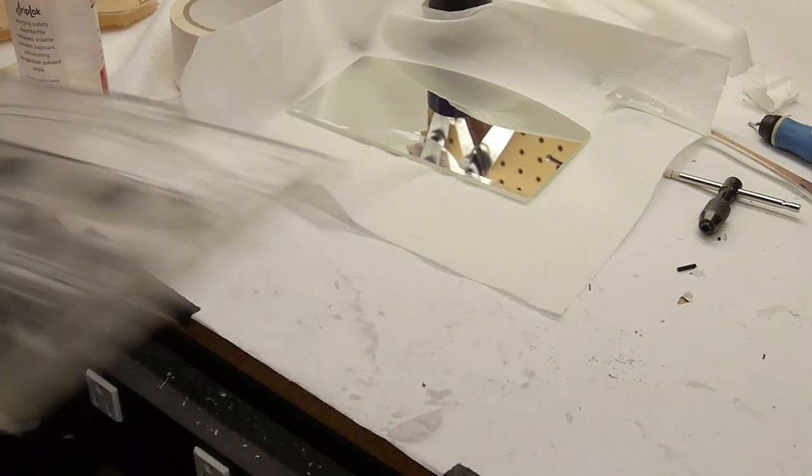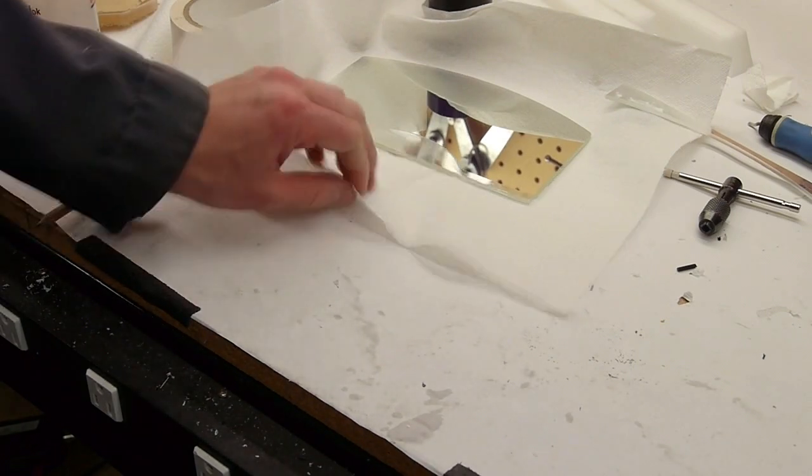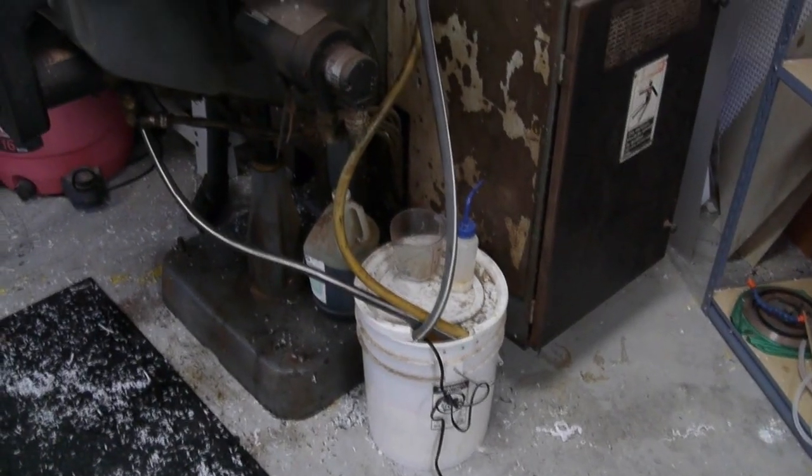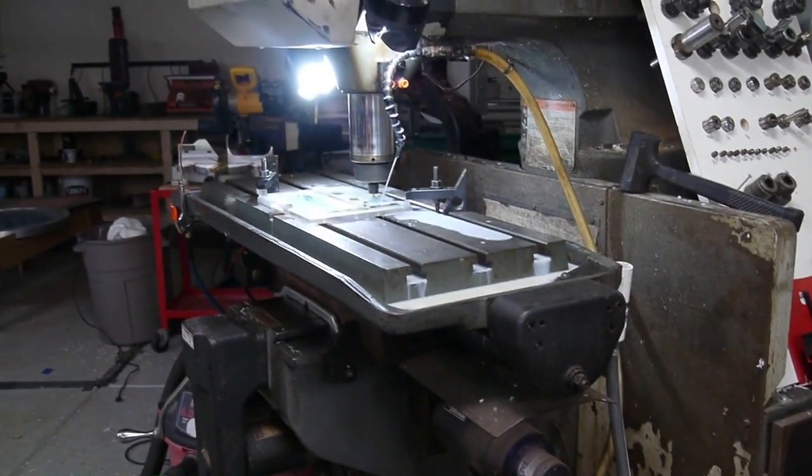Of course, you'll need cutting fluid. And I like using a soluble oil. Actually, I use it for pretty much everything: aluminum, sometimes plastic, and definitely glass. And that keeps the cutter tool cool and also keeps the glass from heating up at the point where it's being cut and breaking due to thermal expansion.